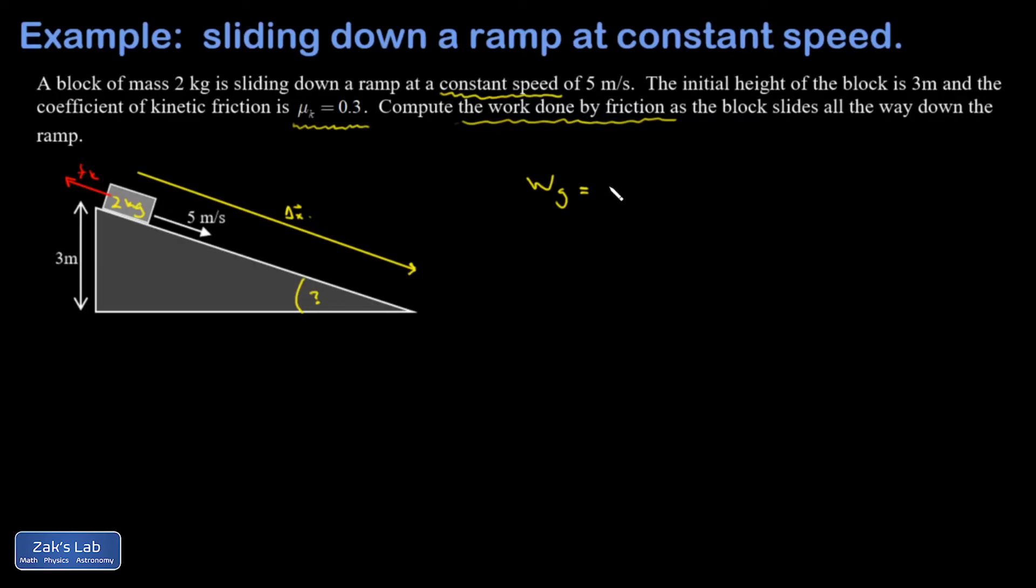And so I would end up with a work done by gravity of 2 kilograms times 9.8 meters per second squared—that's the force of gravity pointing down—and then it does that through a vertical change of 3 meters. So on the way down, gravity does positive 58.8 joules of work.